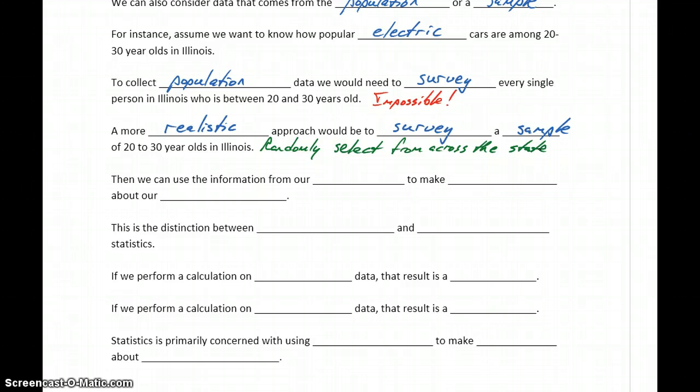That can pose its own problems, but still, even this method of making sure we're getting an equal number of men and women, that people of different ethnicities, different income levels are equally represented, that's still going to be easier than trying to go out and survey every single 20 to 30 year old in Illinois. Instead, what we'll do is look at a sample, some group of people that's smaller than the total population.